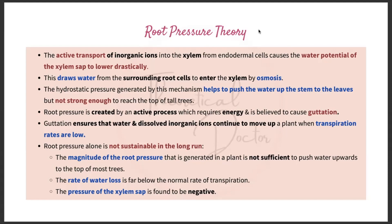Root pressure is created by an active process which requires energy, and is believed to cause guttation. Guttation ensures that water and dissolved inorganic ions continue to move up a plant where transpiration rates are low. Guttation is a process whereby water oozes out at the tips of the leaves, and normally occurs at night or on a humid day — basically like sweating of the plant.